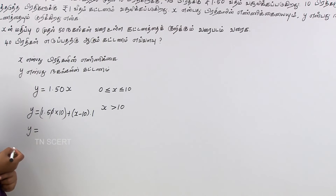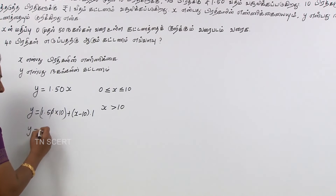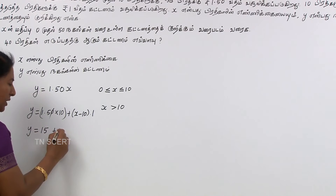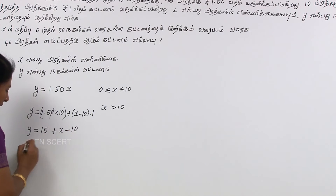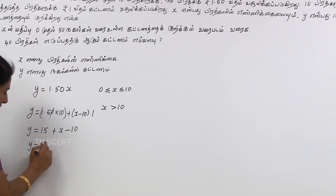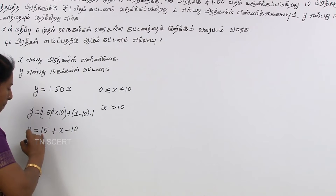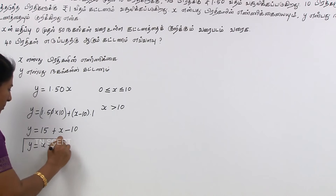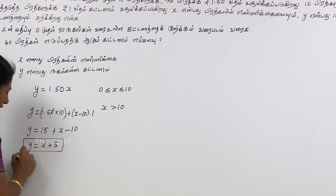We will write. The point is 10. 15. Plus x minus 10. Then y equals: first, x equals x. 15 minus 10. Then we write plus 5. So, if we write — the point of this — x plus 5. Do you understand?